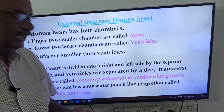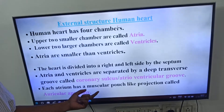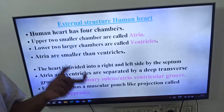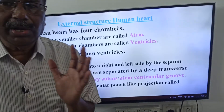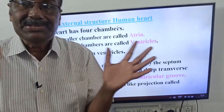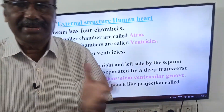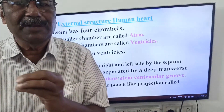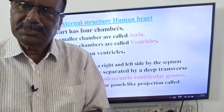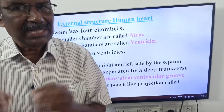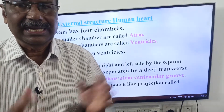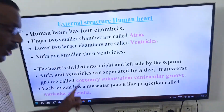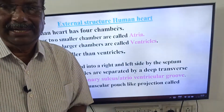Next, very, very important — one more term. Each atrium has a muscular pouch-like projection called the auricular appendix. This means both the right atrium and the left atrium each have a muscular pouch-like projection called the auricular appendix.